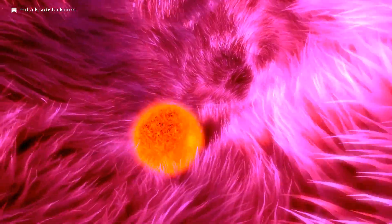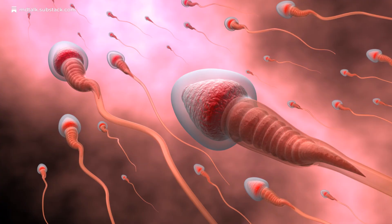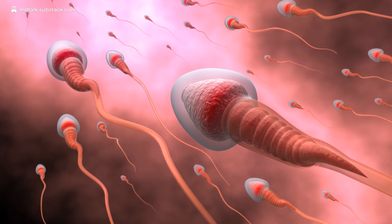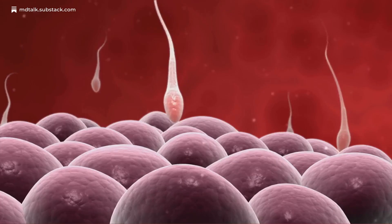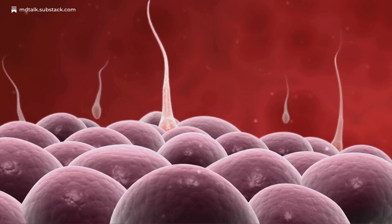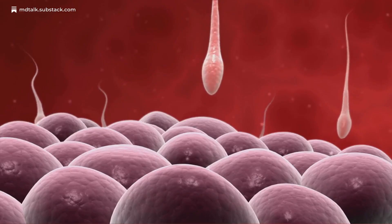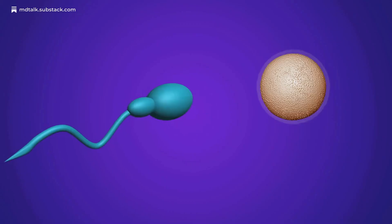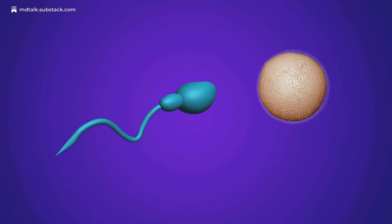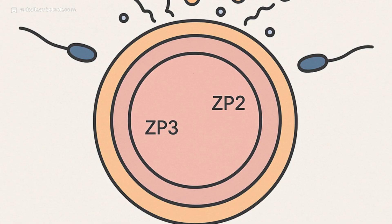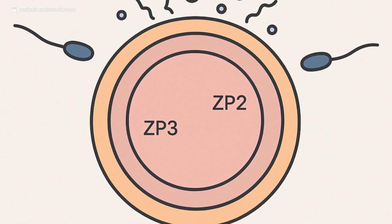Fertilization is a multi-step lock and key process. Sperm undergo capacitation in the female tract, enhancing motility and preparing for acrosomal release. They navigate through the corona radiata and bind to ZP3 on the zona pellucida, triggering the acrosome reaction. Enzymes digest a path to the oocyte membrane, where Izumo-1 and Juno facilitate fusion. The cortical reaction then modifies ZP proteins to prevent polyspermy.